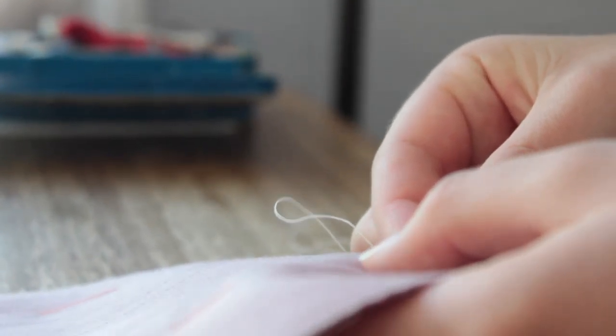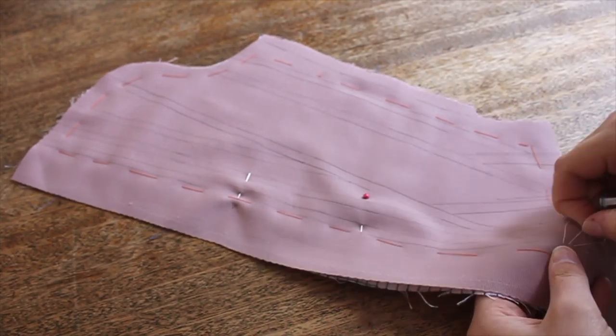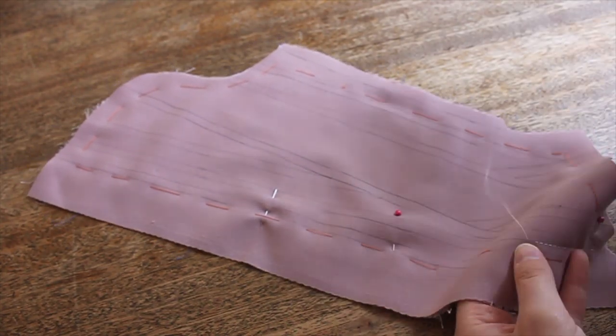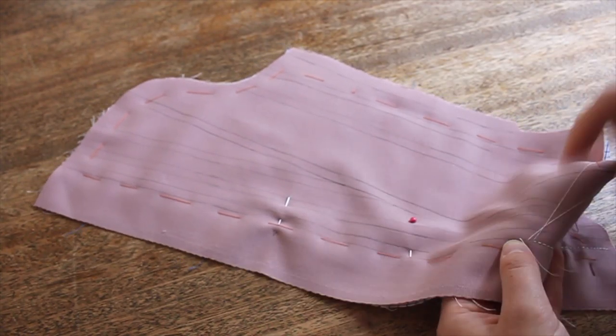Next, I moved on to the back panels. I started at the side of the panel where the eyelets will be located, stitching from bottom to top, and moved towards the other side of the panel as I stitched. The short channels for bones and the tabs were stitched from top to bottom.